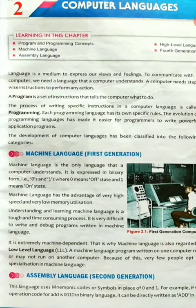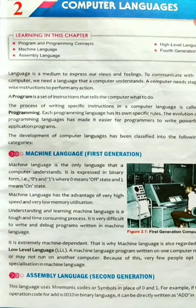Machine language has the advantage of very high speed and very low memory utilization. Very high speed means a program written in machine language can be executed by the computer very quickly compared to programs written in other generation languages. Very low memory utilization means a machine language program uses very little memory space to store and execute, because it does not need any translator program as it is directly understood by the computer.